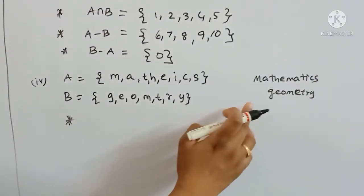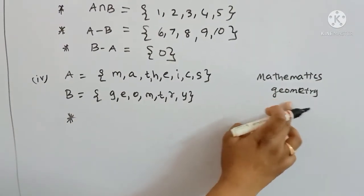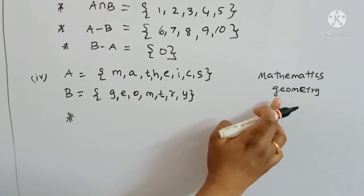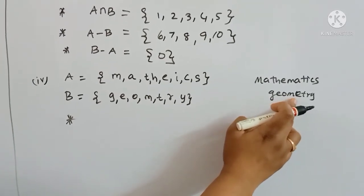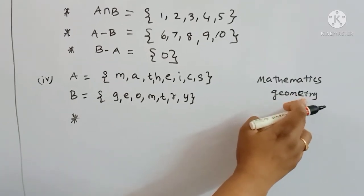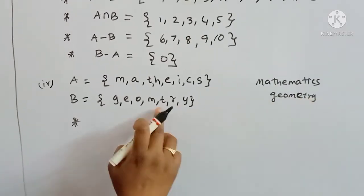Set B is the set of all letters of the word 'geometry': {g, e, o, m, t, r, y}.